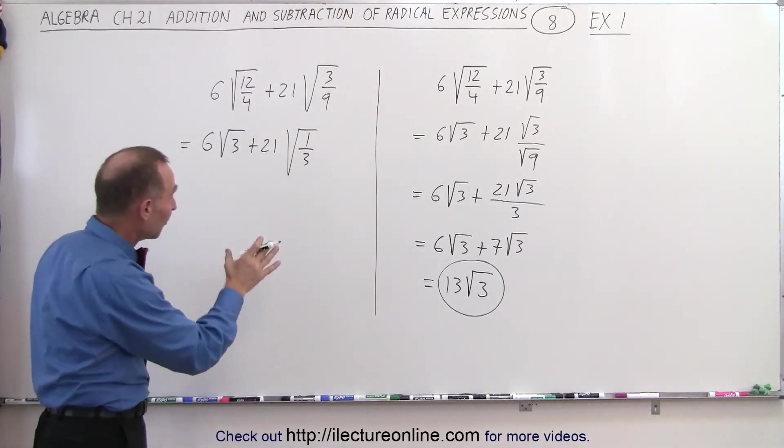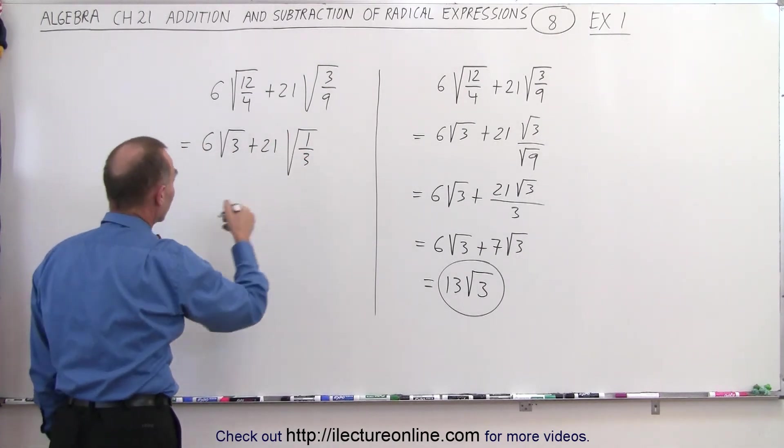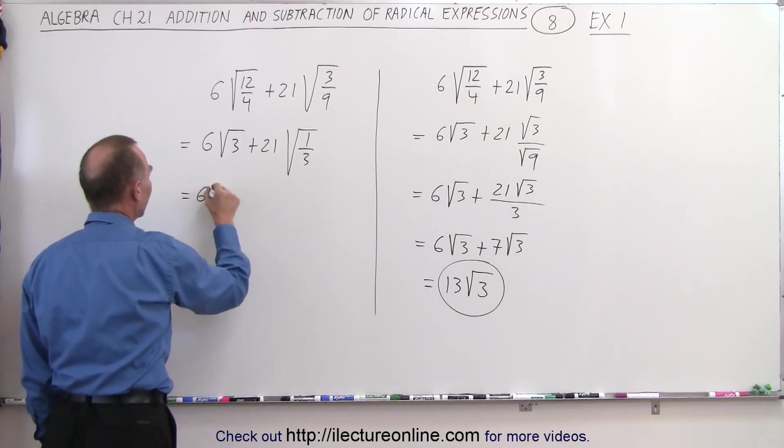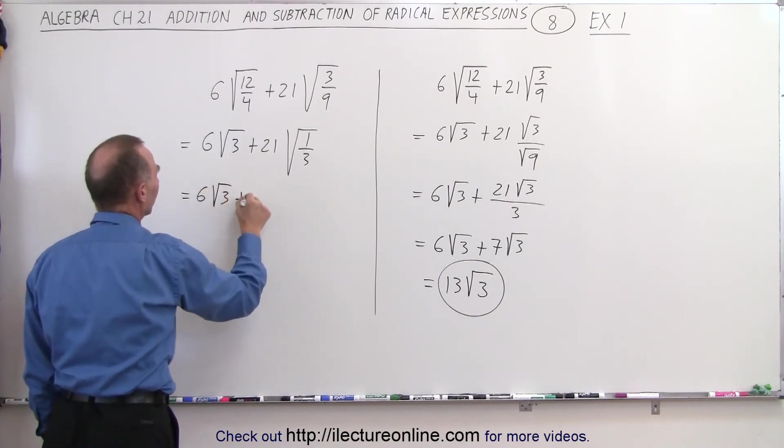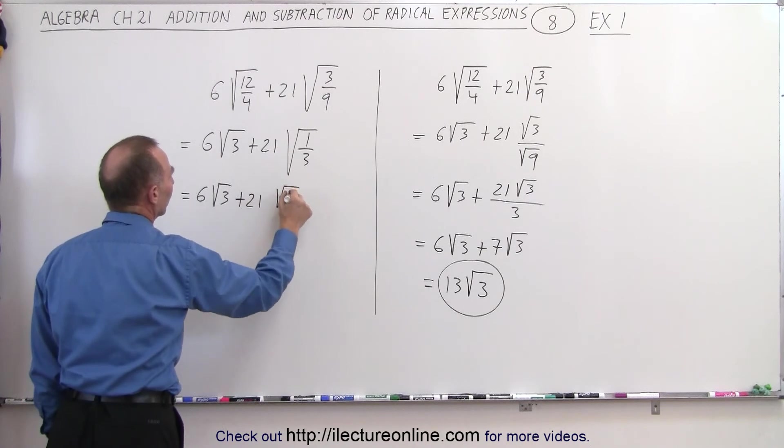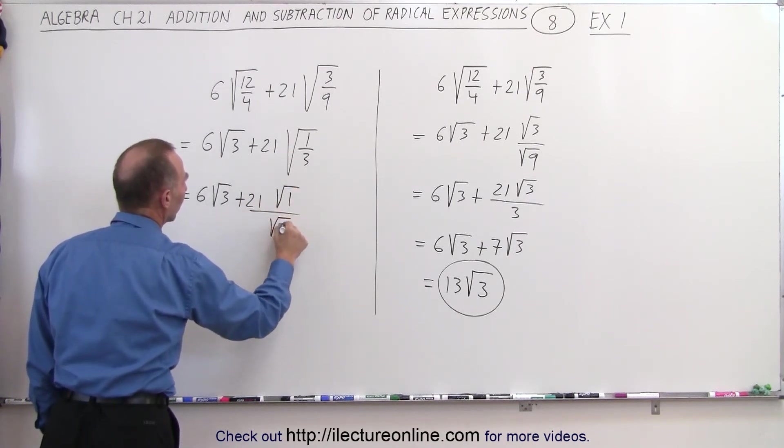And then you say, well, I can simplify that by separating the numerator from the denominator. So this equals 6 times the square root of 3, plus 21 times the square root of 1 divided by the square root of 3.